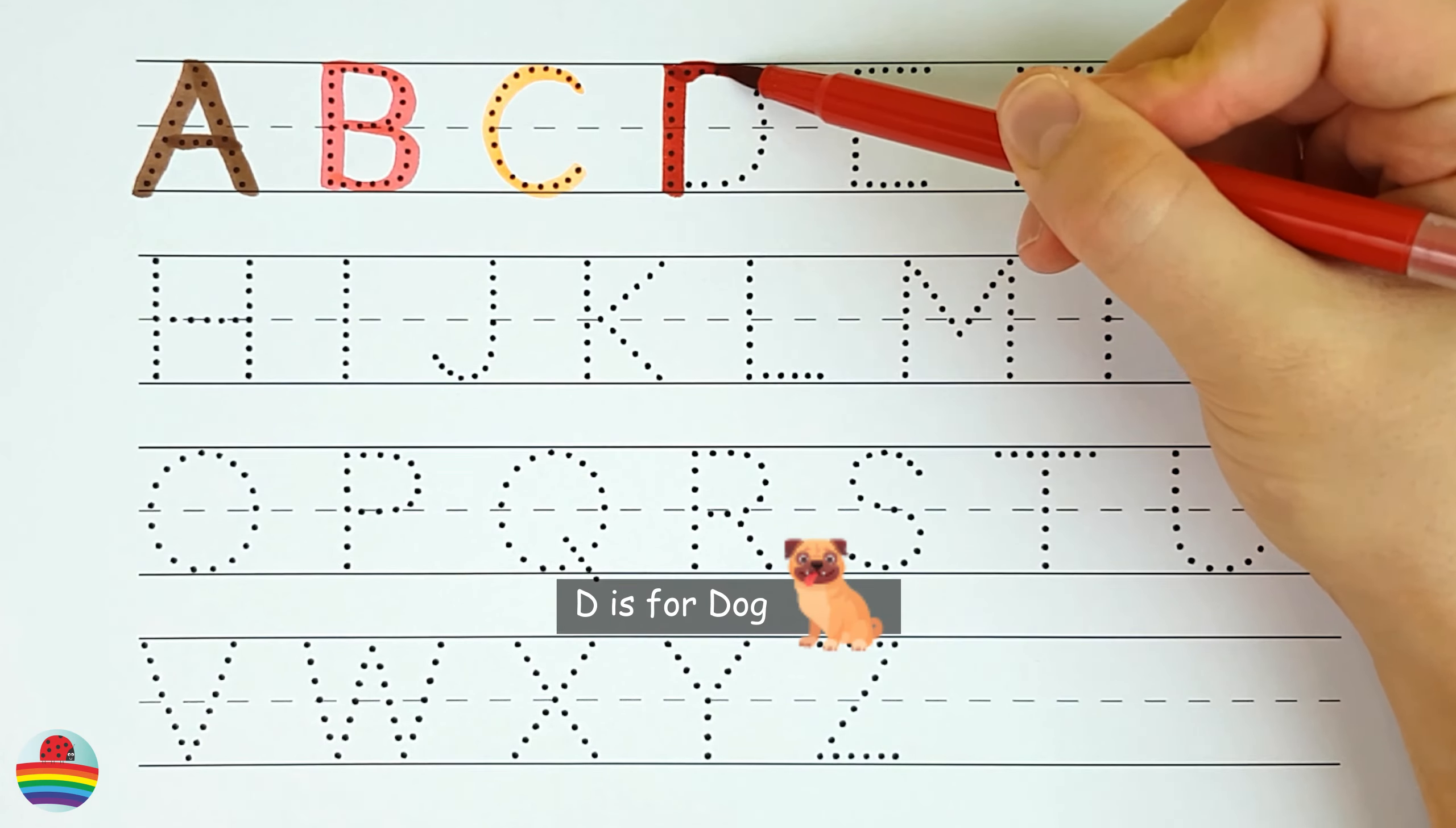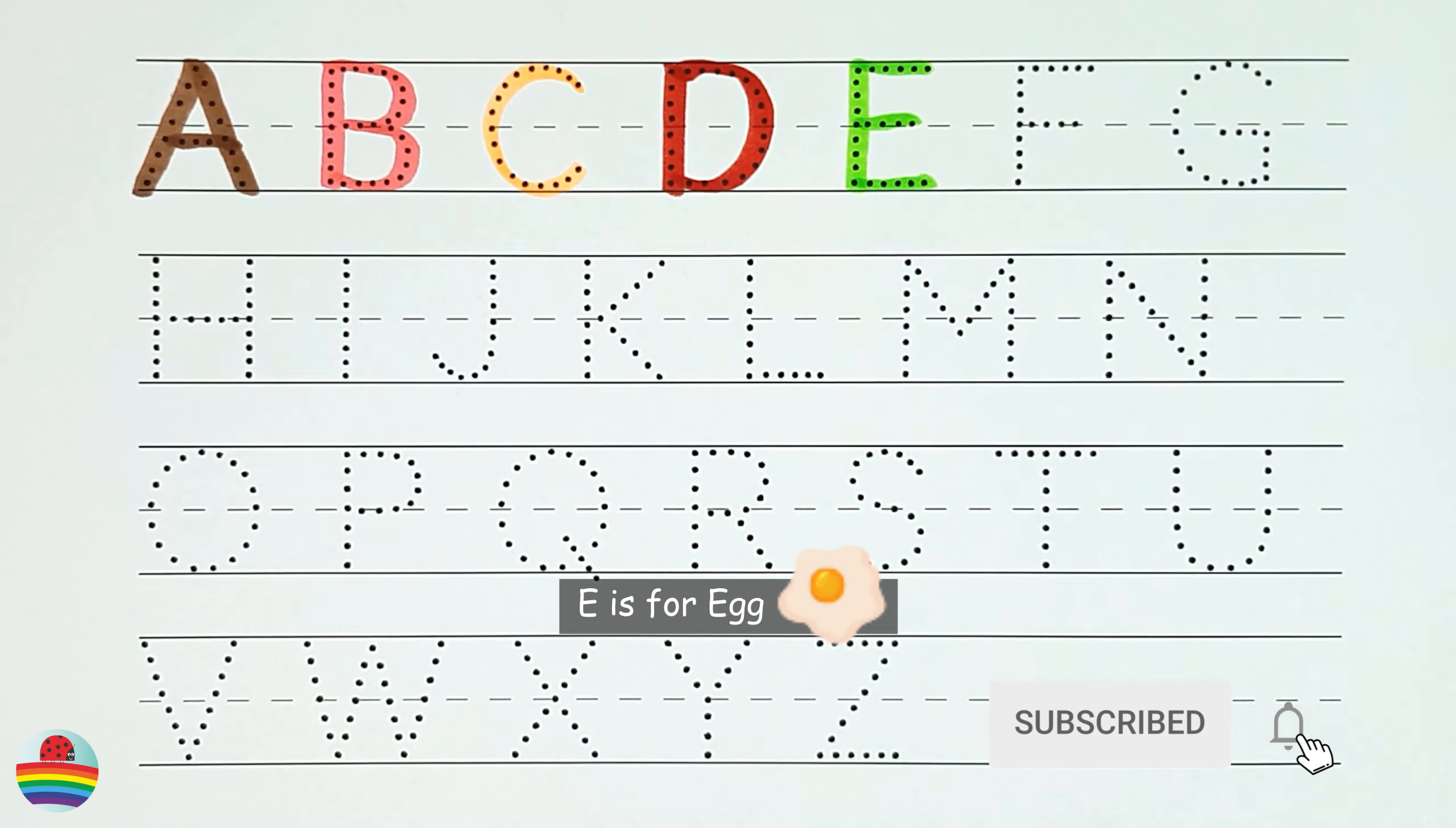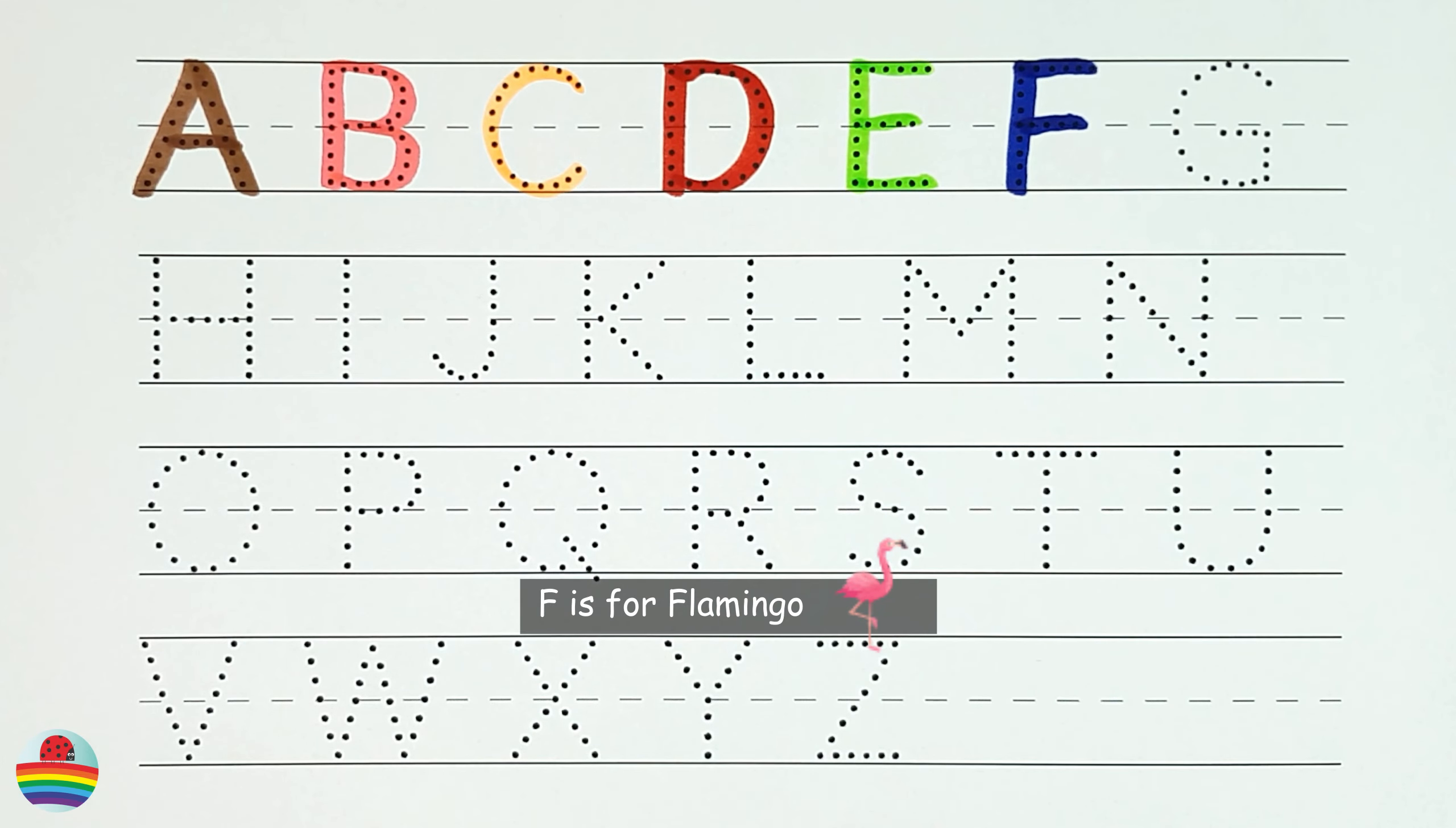D. D is for dog. E. E is for egg. F. F is for flamingo.